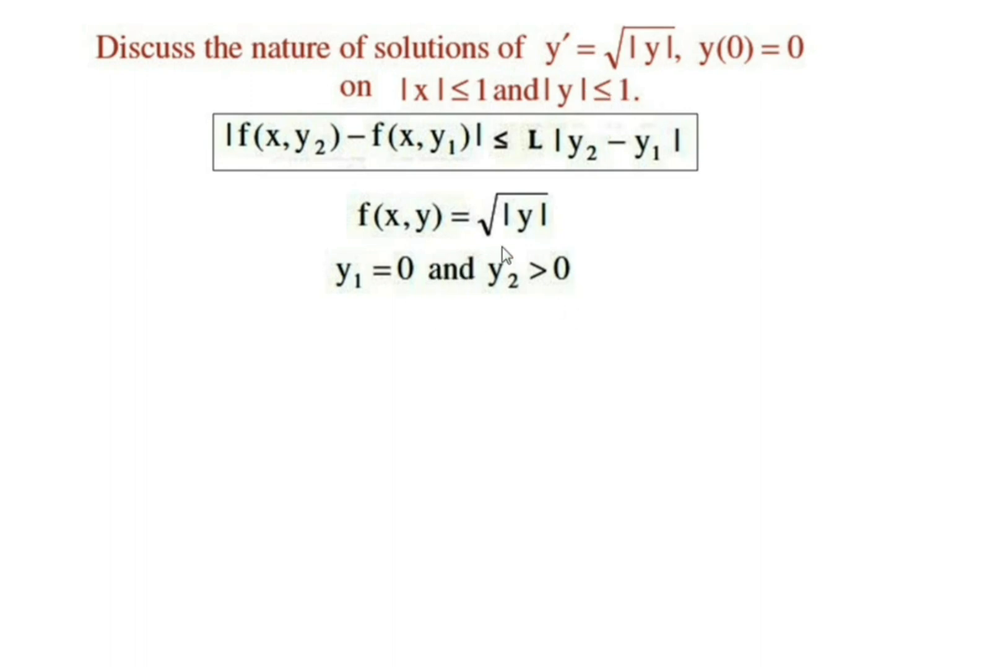Now, we select (x,y₁) and (x,y₂) as two points of the rectangular region. Then, we consider |f(x,y₂) - f(x,y₁)| divided by |y₂ - y₁|.